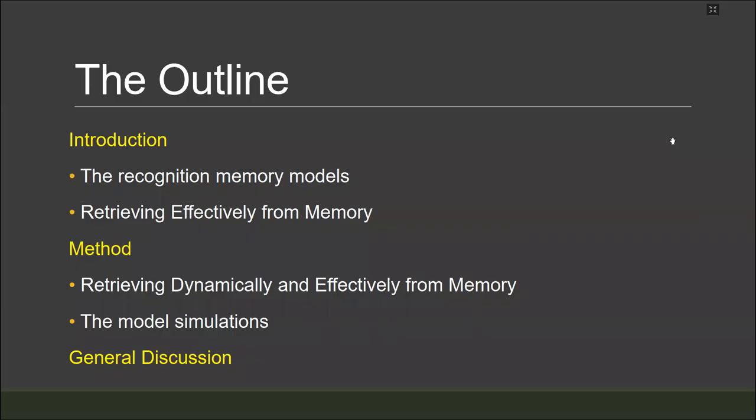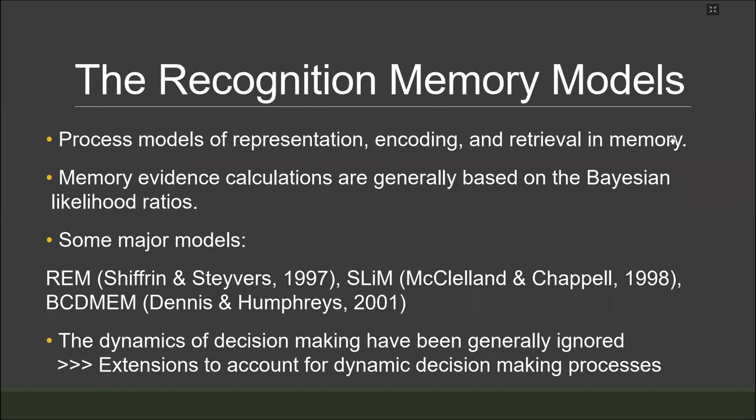Here is my outline. Recognition is the ability to distinguish previously encountered items from new ones. The process models of recognition memory explain all these states of recognition and suggest mechanisms of operation. Note that almost all the major models of recognition ignored the course of decision making and didn't account for the response time data until some extensions of these models were developed.